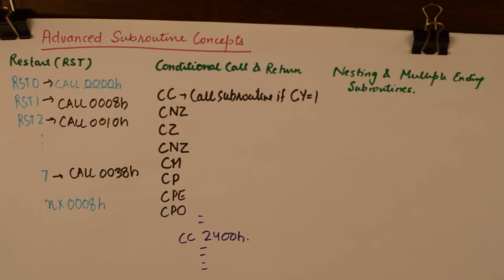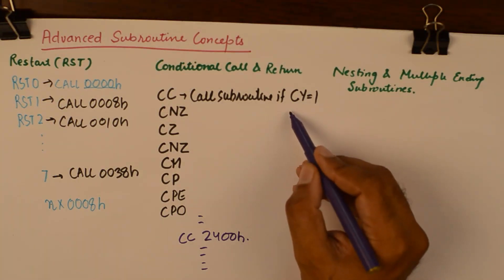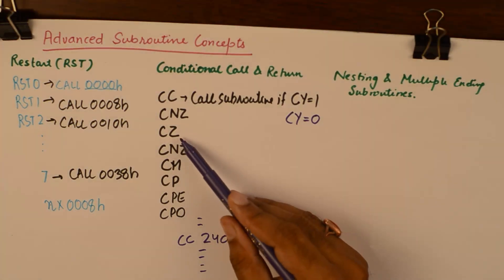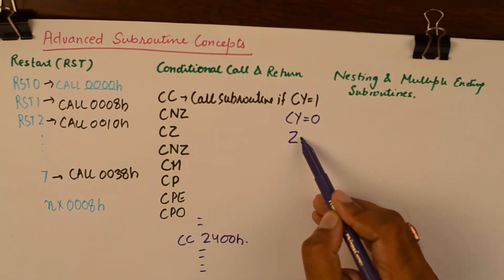A lot of programming liberty is obtained by using conditional call instructions. I have listed all the conditional call instructions and will specify their function. The next conditional call is call the subroutine if carry is not set or carry is reset. Similarly, call the subroutine when the zero flag is set to 1.